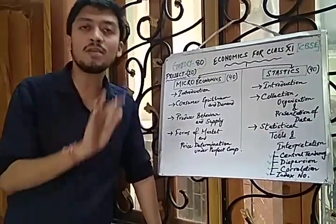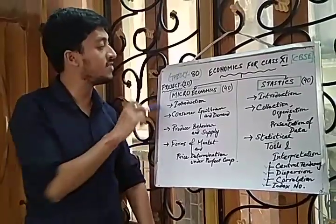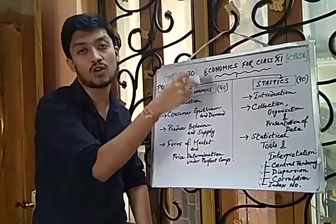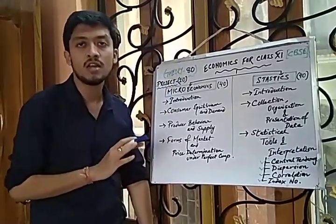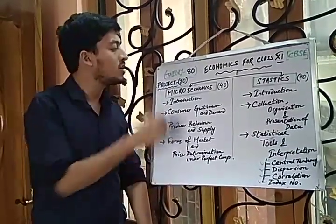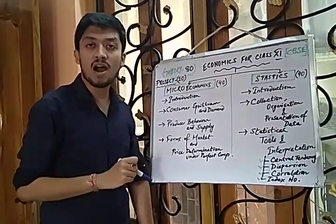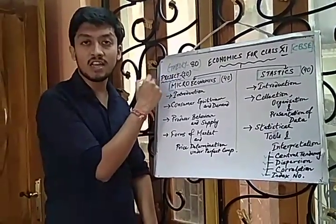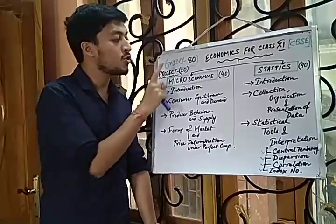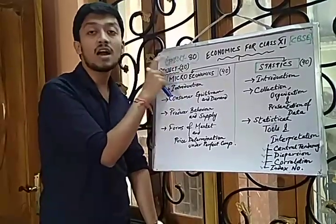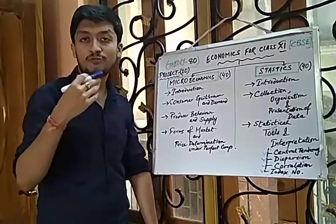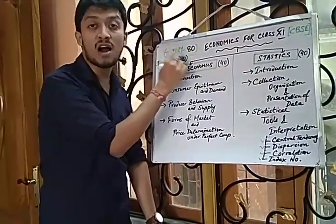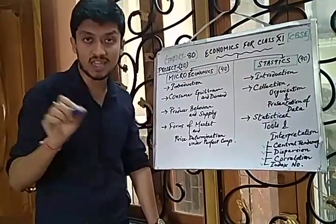However, the marks distribution remained the same. The total Economics paper is 100 marks, segregated into two parts: 80 marks for theory, which is your pen and paper test, and 20 marks for project work including your viva and project file.